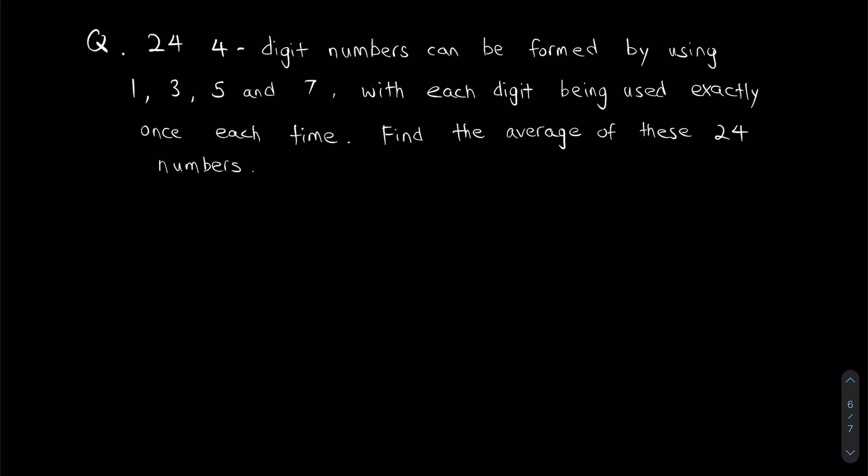Find the average of these 24 numbers. Just in case the question is slightly confusing, let's break it down. Basically, the question is saying using the numbers 1, 3, 5, and 7, I can form 24 different numbers if in each of those numbers there's no repeats.